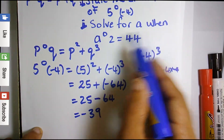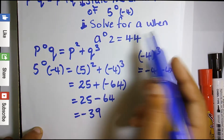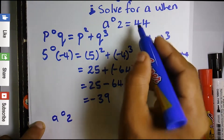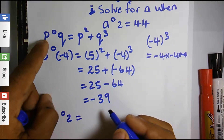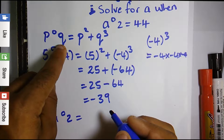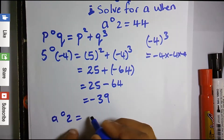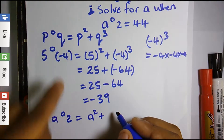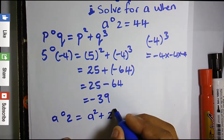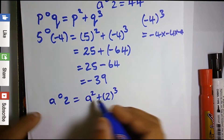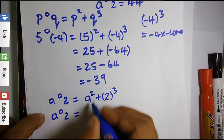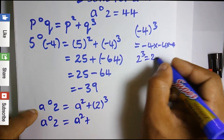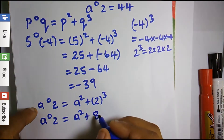The second part asks us to solve for 'a' when a O 2 equals 44. We use the same operation. P is 'a' and Q is 2, so wherever we see P we replace it with 'a'. So we get a squared plus 2 cubed, meaning a O 2 = a² + 2³.